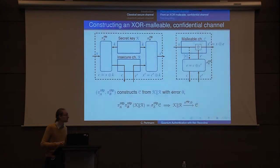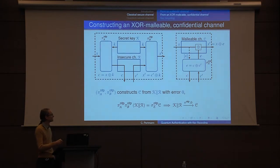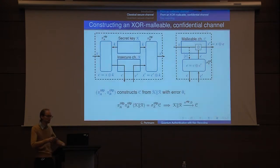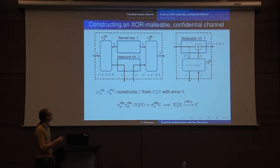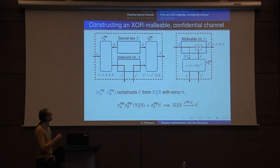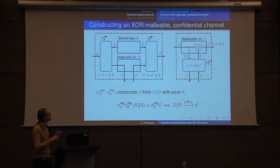To prove this is the case, we find a simulator that does the obvious thing: outputs a completely random cipher, gets C′, computes the XOR, which gives the bit flips Eve performed. Bit flips commute with the one-time pad, so we do the same bit flips there. This shows the one-time pad maps these two resources to what I'm calling an XOR-malleable channel.